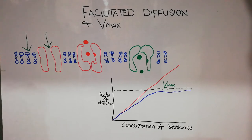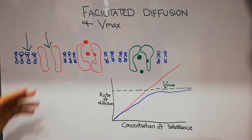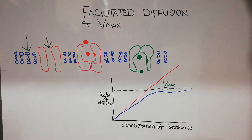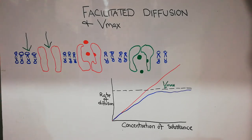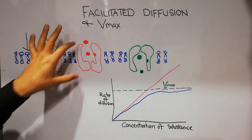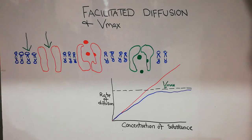The protein channels that water passes through act simply as channels and do not have any limitation. But some substances like glucose pass from outside the cell towards inside with the help of certain proteins that facilitate their transport — this is known as facilitated diffusion. However, facilitated diffusion has certain limits; it cannot function limitlessly and has a maximum rate of diffusion beyond which it cannot function.